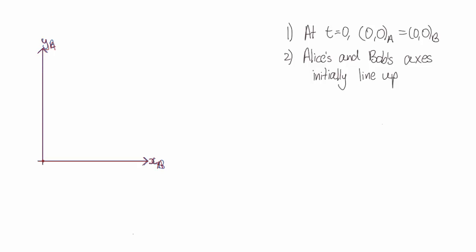And finally, we're going to assume that Alice moves along Bob's x-axis, and it's going to be at some constant velocity v. So no acceleration, no turning.